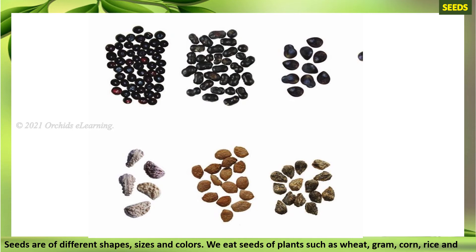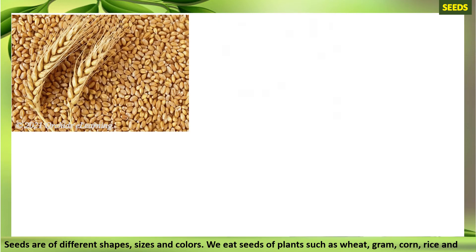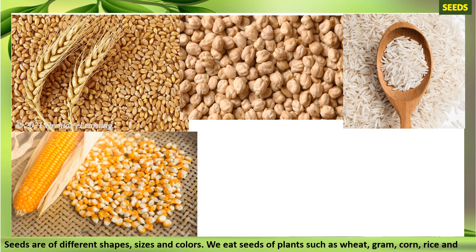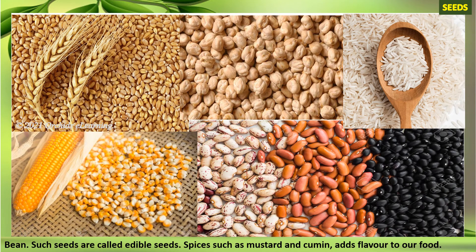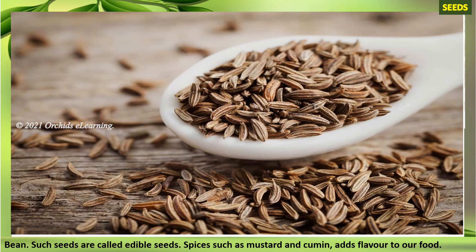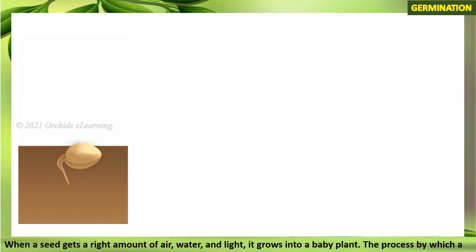Seeds are of different shapes, sizes, and colors. We eat seeds of plants such as wheat, gram, corn, rice, and bean. Such seeds are called edible seeds.